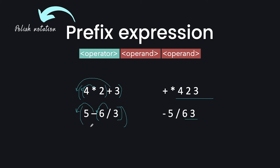Now you might think — you said that prefix expression is given to the computer because the computer cannot handle infix directly. So how will the computer know which is the operator, which is its precedence, and which two operands it operates on? If I reverse the logic of how we converted infix to prefix, then I can evaluate the prefix expression correctly.